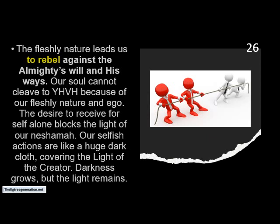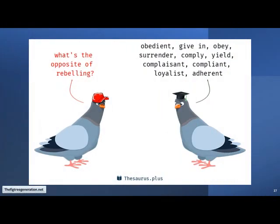The fleshly nature leads us to rebel against the Almighty's will and his ways. Our soul cannot cleave to Yahuwah because of our fleshly nature and ego. The desire to receive for self alone blocks the light of our Neshama. Our selfish actions are like a huge dark cloth covering the light of the Creator. Darkness grows, but the light remains. Man is rebelling against his Creator because he is led by Satan, who was the first one that rebelled. The opposite of rebelling is to be obedient — to give in, obey, surrender, comply, yield, and be adherent. Remember, we are created and our Heavenly Father has a right to lay down the rules, which he did by giving the Torah — the instruction to Moses for all Israel and for everyone living.